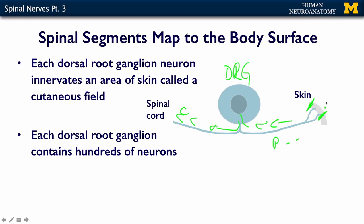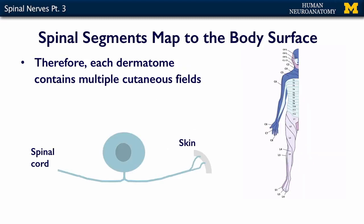So one neuron innervates one tiny area of skin — this is called a cutaneous field. Each dorsal root ganglion contains hundreds of DRG neurons. Therefore, each dermatome contains multiple cutaneous fields, because all the DRG neurons associated with each spinal level are reflected in each dermatome.